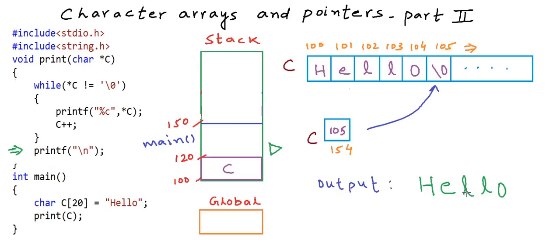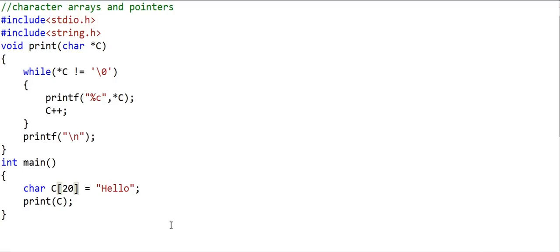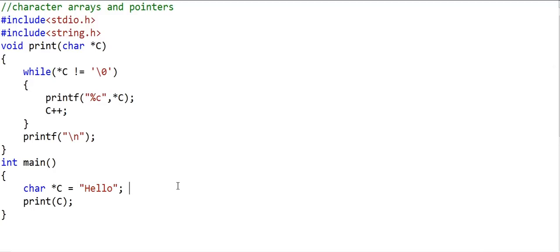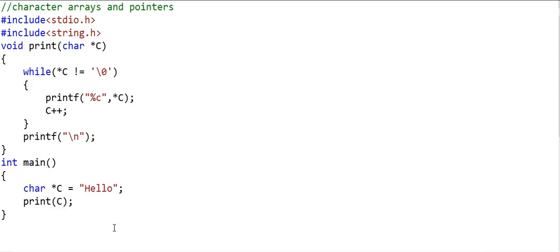So let us now modify this particular code to learn some more concepts. What I'm going to do in my code is instead of creating a character array of size 20, I'll create a character pointer named C and equate it against a string literal in a statement like this. And if you run this program, the output will be the same. What really happens is if you use the string literal in initialization statement of an array, something like this, then the string gets stored in the space that is allocated to the array.